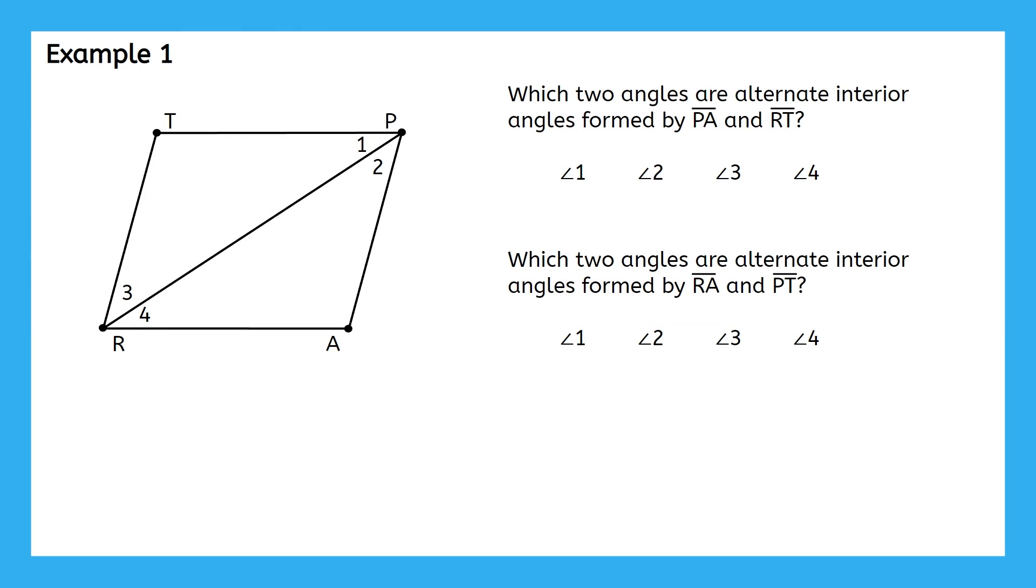Here's our first example. There are two questions that we have here about the quadrilateral on the left. The first asks, which two angles are alternate interior angles formed by PA and RT? This diagram looks a little different than back when we learned about transversals in unit 3, but we can visualize it in a way that's more familiar. Maybe something like this?